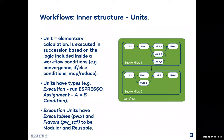A unit is an elementary calculation executed in succession based on the logic included inside the workflow. For example, we can deal with a convergence scenario, an if-else condition, or in more sophisticated cases things like MapReduce. Units have different types: execution, to run Quantum Espresso for example; assignment, where we assign a variable A equals B; and condition, when we have a fork in the flow. Execution units have executables — such as pw.x — and flavors, for example PWSCF. This concept is introduced for modularity and reusability.